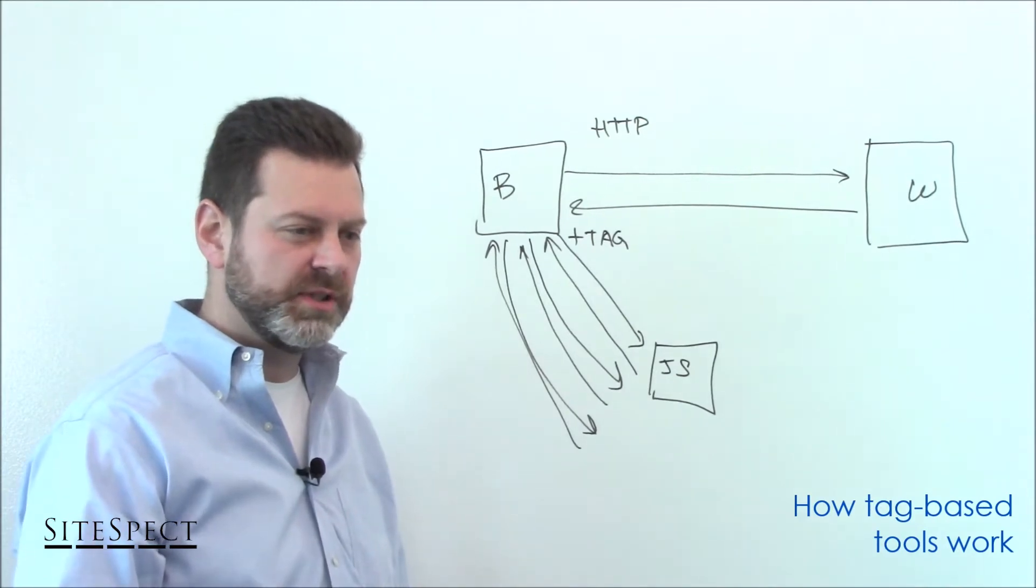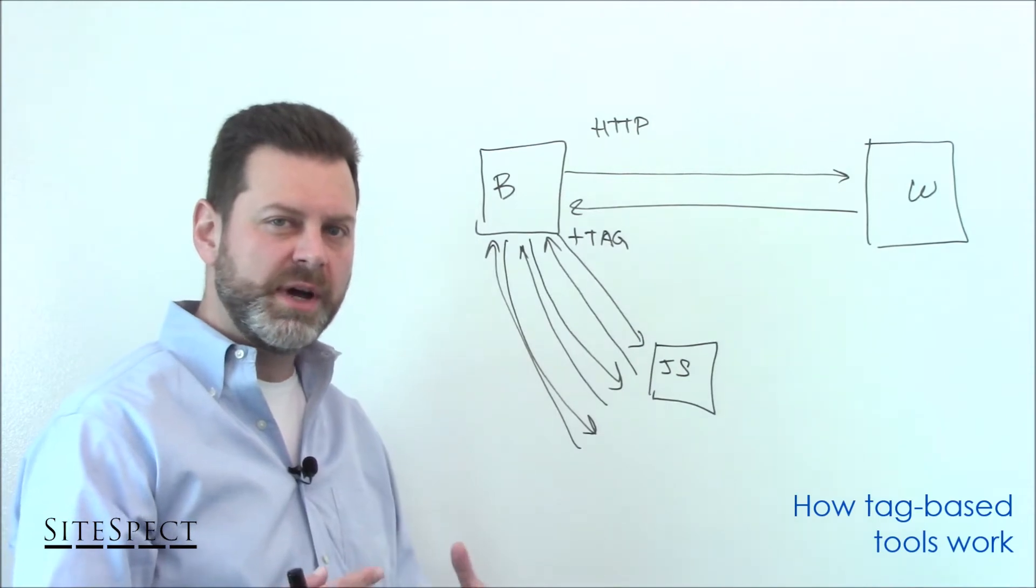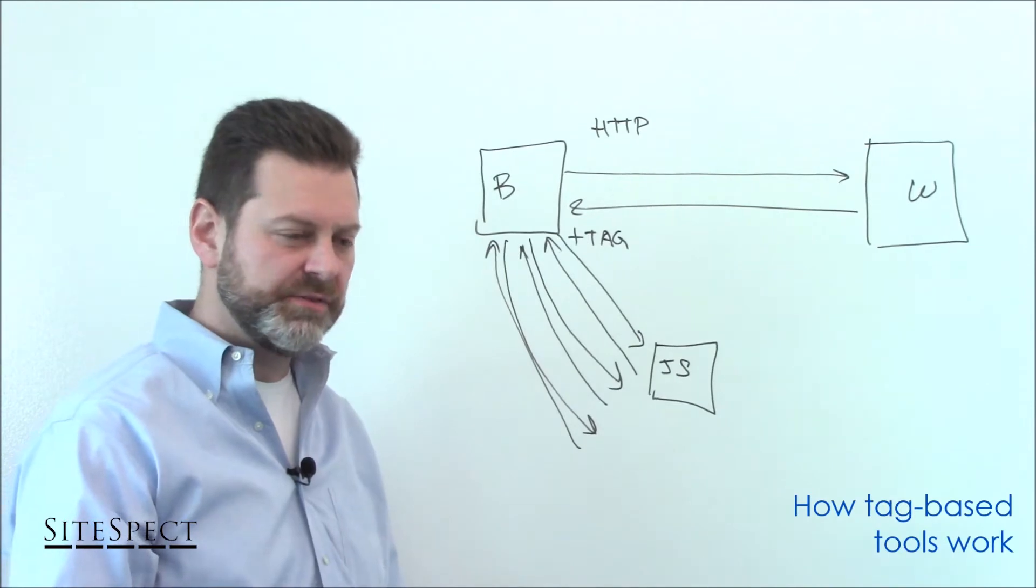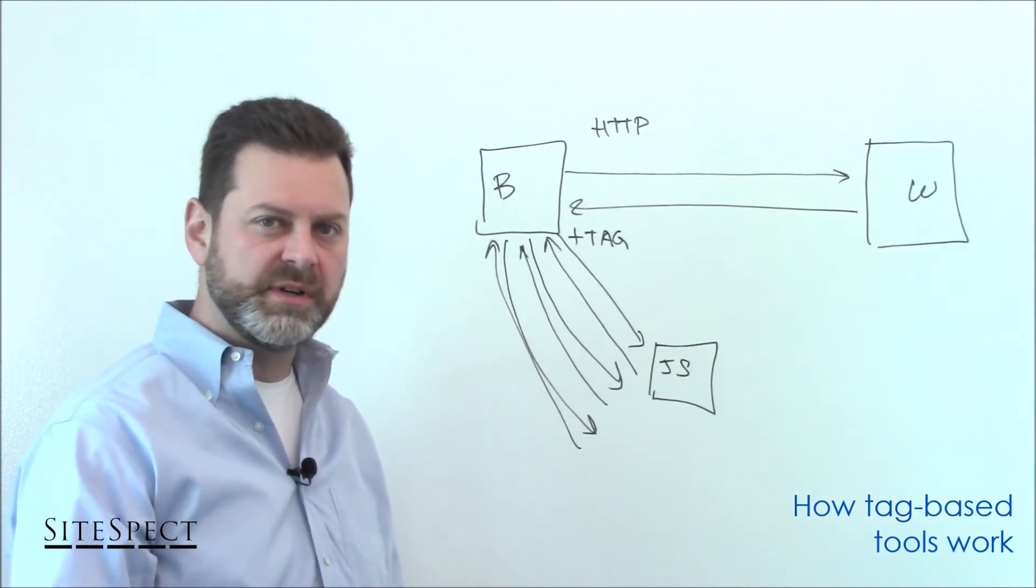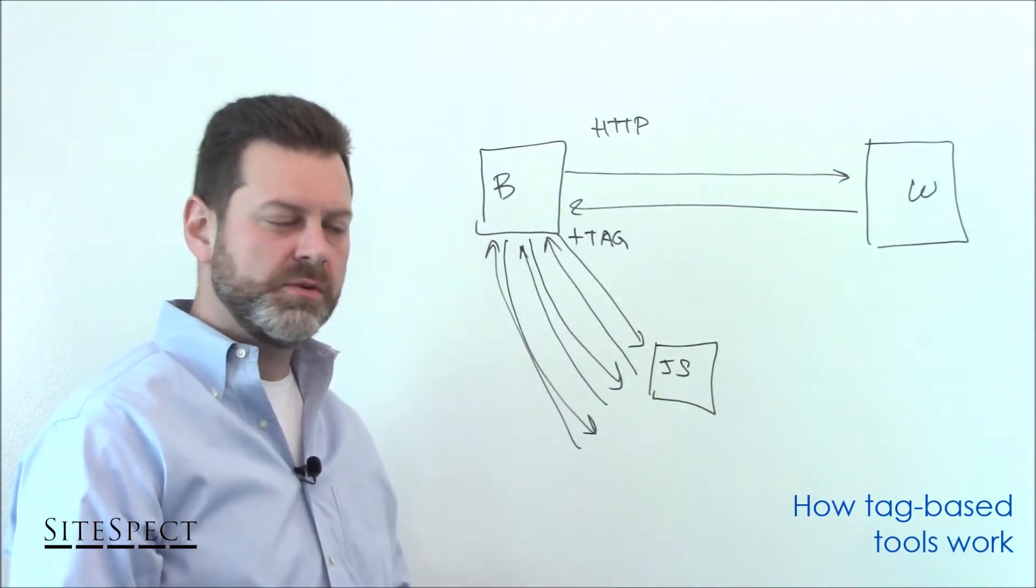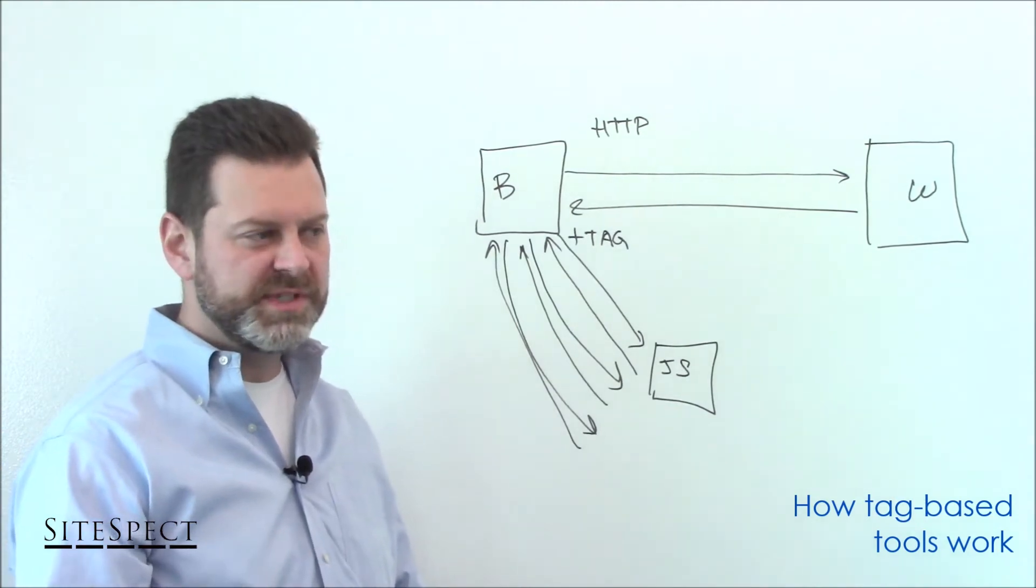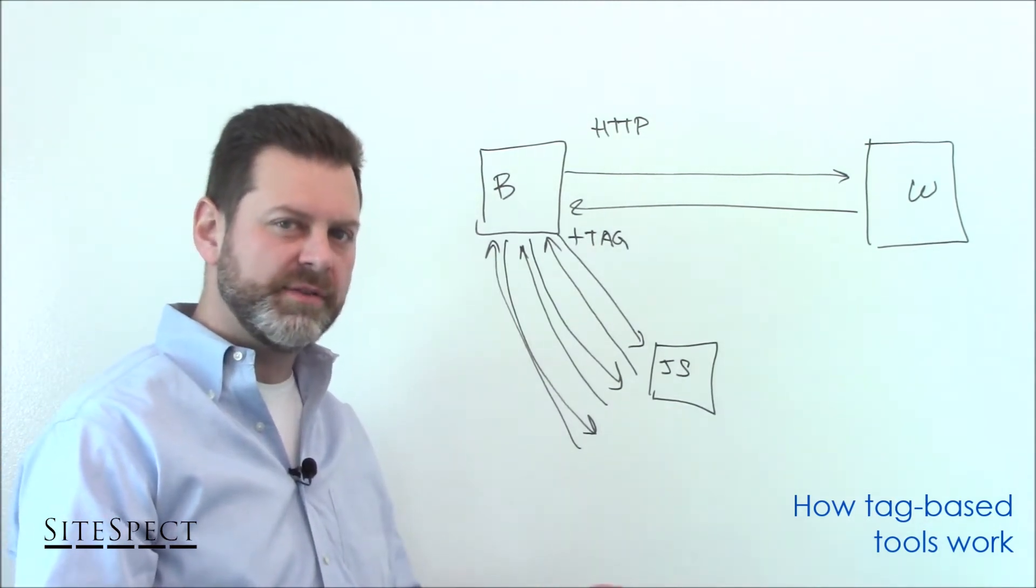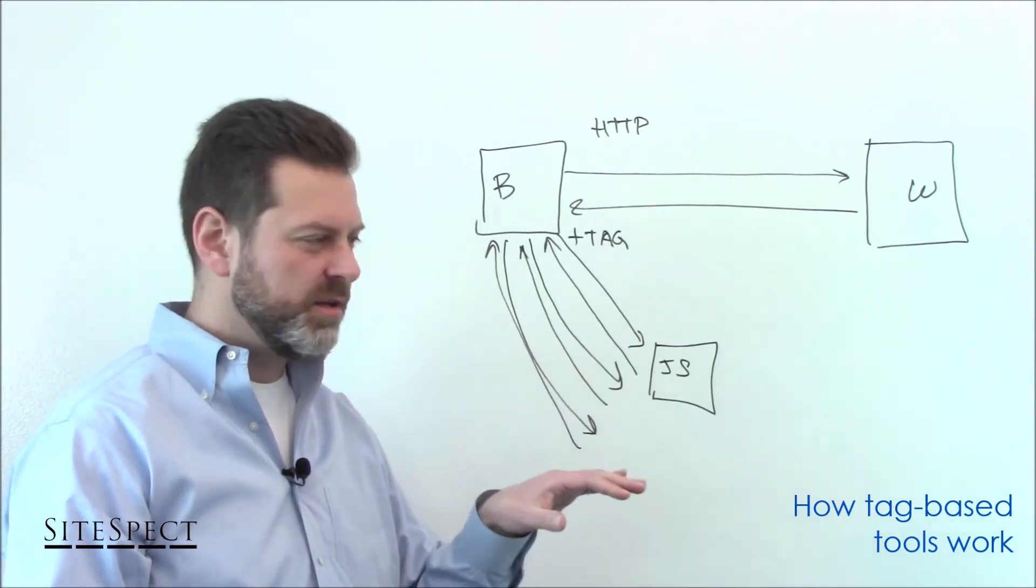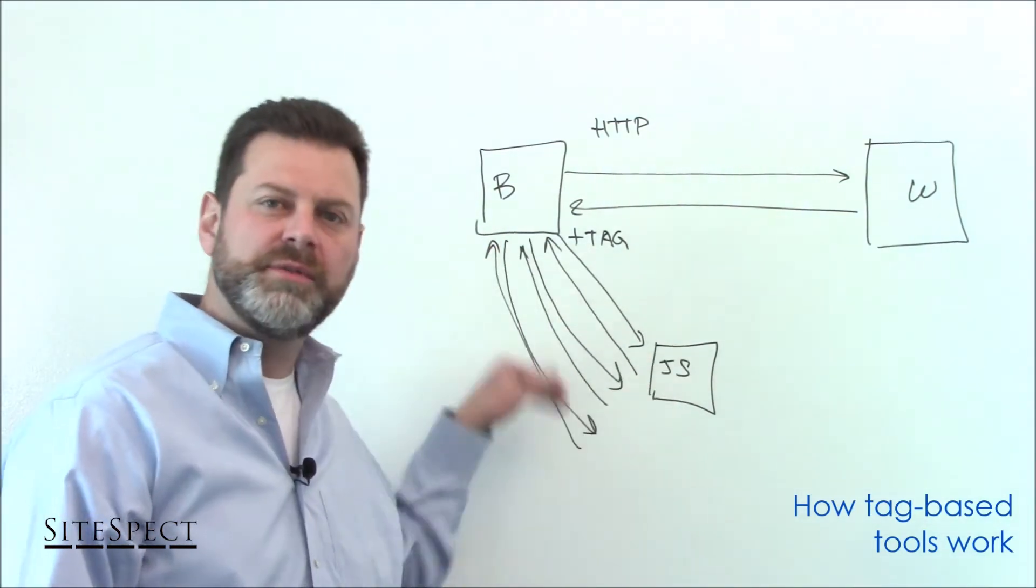And not only is this potentially confusing or harmful just from a UX standpoint, but it actually can undermine your test data because different browsers and different page load speeds and different devices, some may be more severely impacted by this flicker than others. And so you've got a scenario where you're collecting data about the experiment that you're running and some people have seen flicker and some haven't. And it's really quite difficult to discern whether the data that you've collected for an individual user has been tainted by flicker or not. So the best case, of course, is if you can avoid flicker altogether.